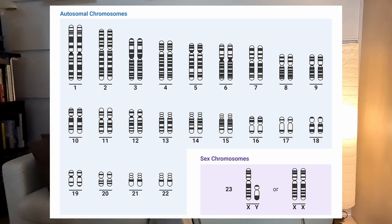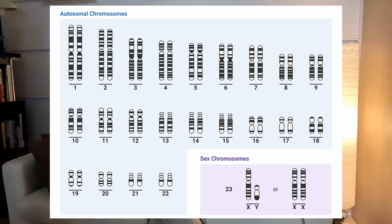We humans have 23 pairs of chromosomes. Each pair is composed of a chromosome coming from your dad and a chromosome coming from your mom, so there are two copies of each gene — one inherited from one parent and the other from the other parent. We have 22 pairs of autosomal or non-sex chromosomes and one pair of sex chromosomes, which determine our sex. Women have two X chromosomes, and in the case of men, it is composed of an X chromosome and a Y chromosome.